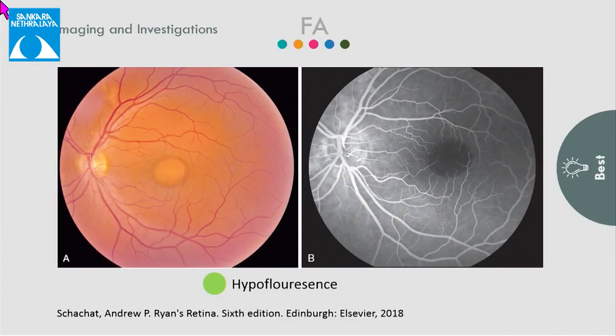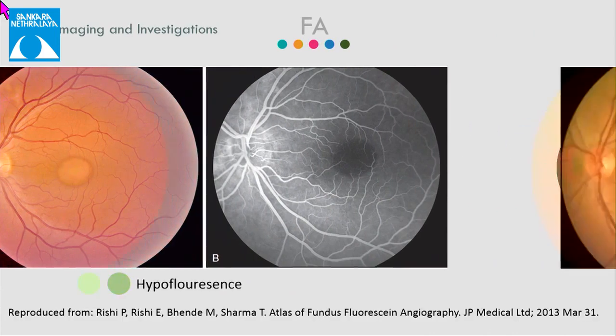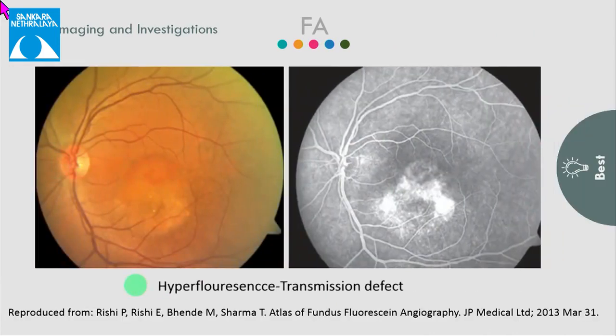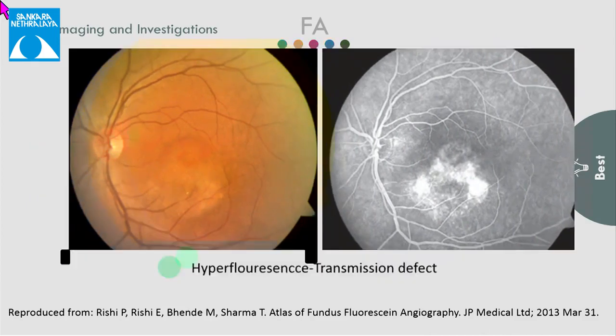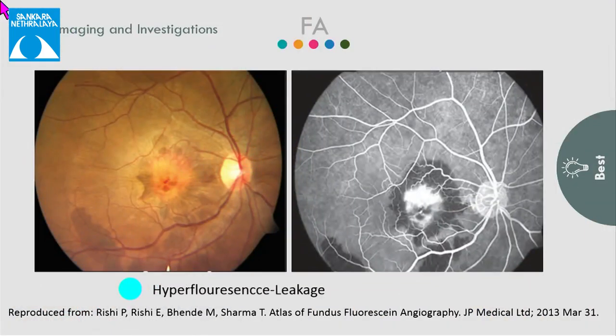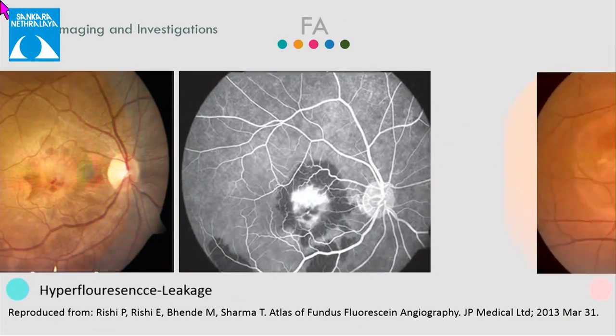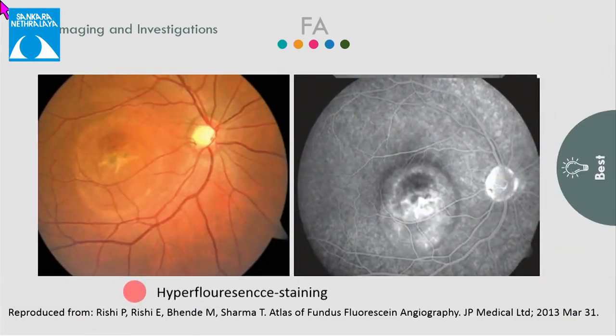On fluorescein angiography, there is blocked fluorescence seen in the vitelliform stage. Hyperfluorescence can be seen because of transmission defects, because of leakage when there is development of CNVM, or because of staining from the fibrotic scar.